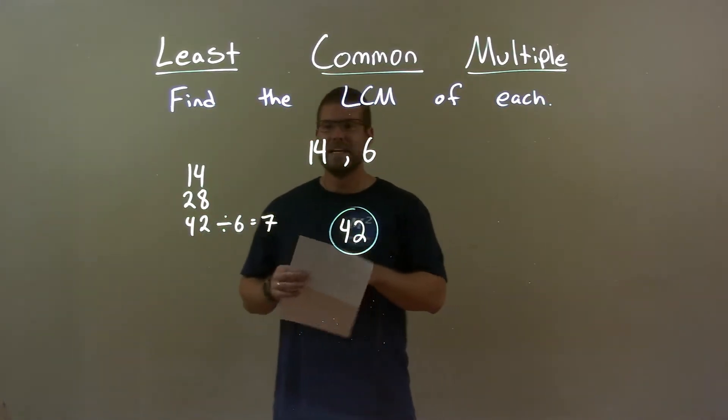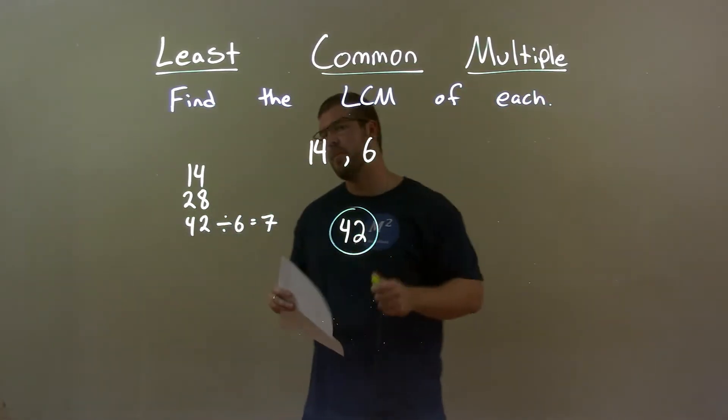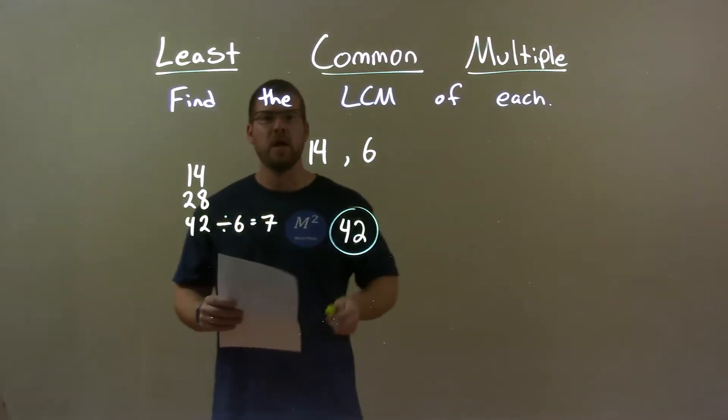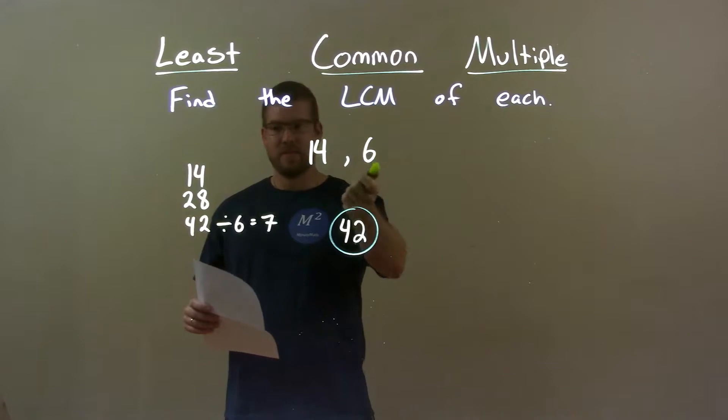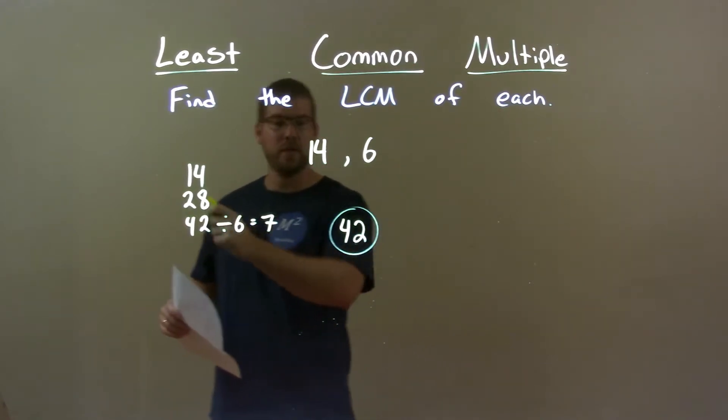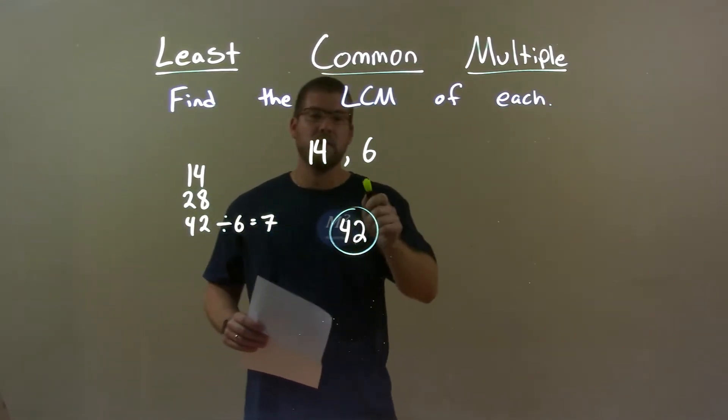So, quick recap, we're given 14 and 6, and we define the least common multiple of the two. Well, we go through the multiples of 14, and the smallest multiple of 14 that 6 also goes into is 42. So, my final answer here is just 42.